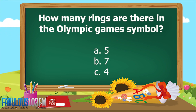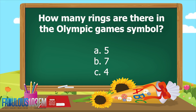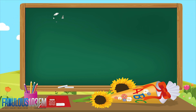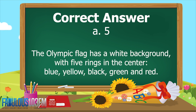The second question yesterday: how many rings are there in the Olympic Games symbol? Are there A: 5, B: 7, or C: 4? And of course the correct answer is A: 5. The Olympic Games symbol has a white background with five rings in the centre.